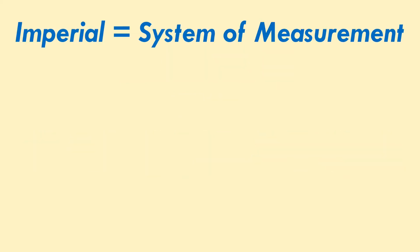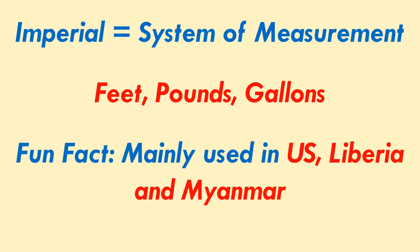Like the metric system we took a look at last time, the imperial system is also a system of measurement, using the feet, pounds, and gallons as its common units. It's mainly used in the US, Liberia, and Myanmar. All the other countries tend to use the metric system for the majority.